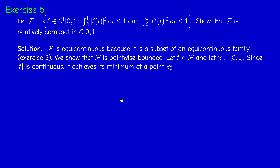If we take any element f in this collection, then the absolute value of f is continuous and therefore achieves a maximum and a minimum value. We are interested in the minimum. The modulus of f achieves a minimum value at some point x₀, which depends on f — you could call it x_f — because it may vary from function to function.